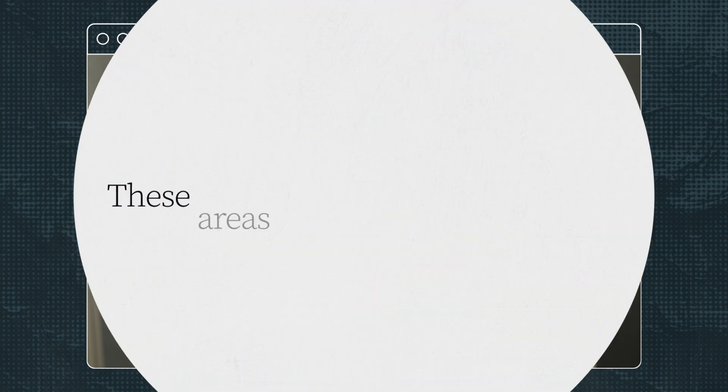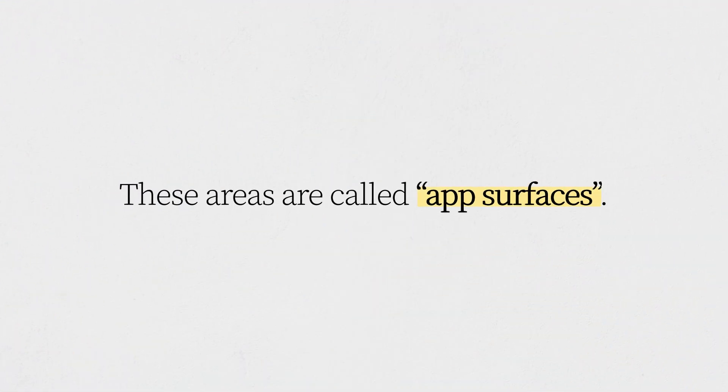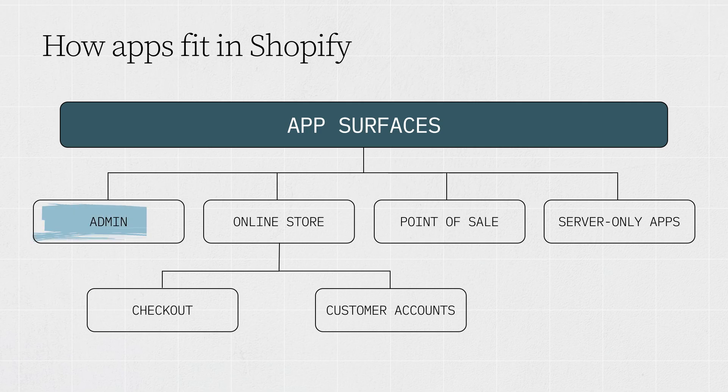You can create public apps to list on the Shopify App Store, or create custom ones for a single merchant. Apps interact with different areas of the Shopify platform and extend its functionality. These areas are called app surfaces. The main surfaces are admin, online store, point of sale, and server-only apps.